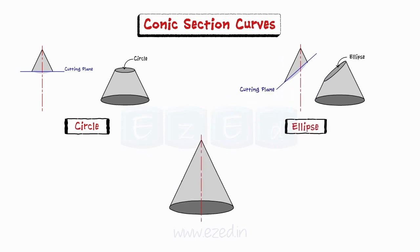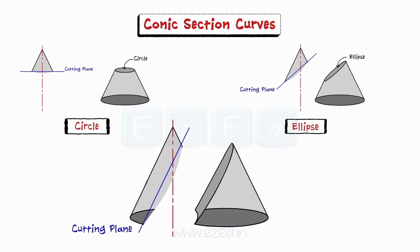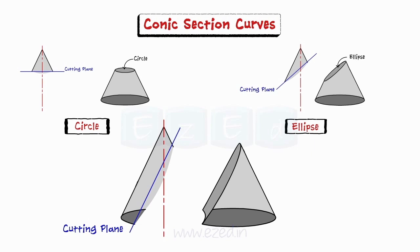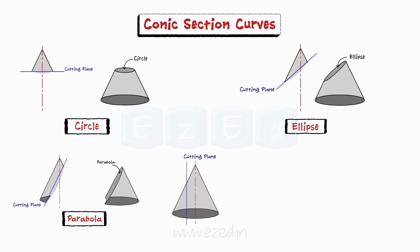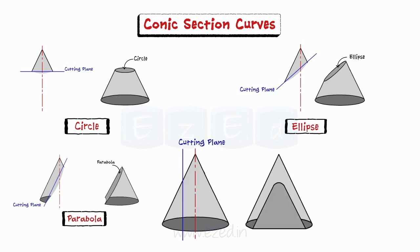When the cutting plane is inclined to the axis of the cone and parallel to one of the generators, the section obtained is called a parabola. When the cutting plane is parallel to the axis of the cone, the section obtained is a hyperbola.